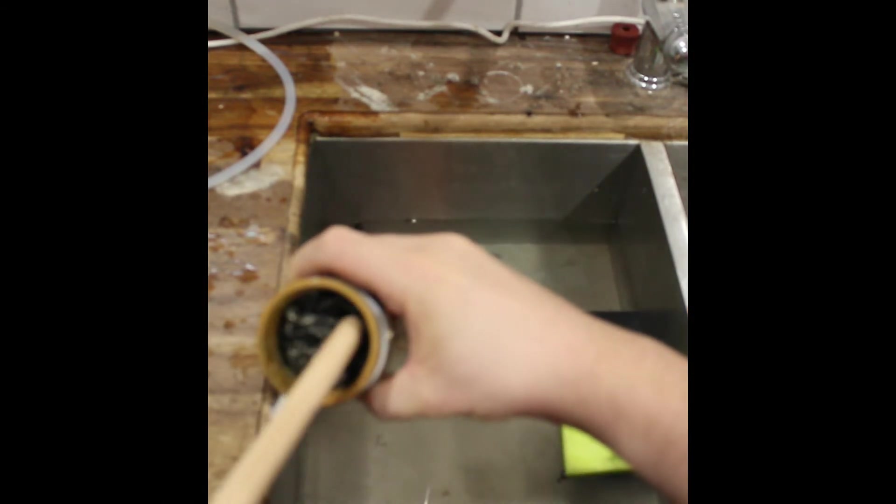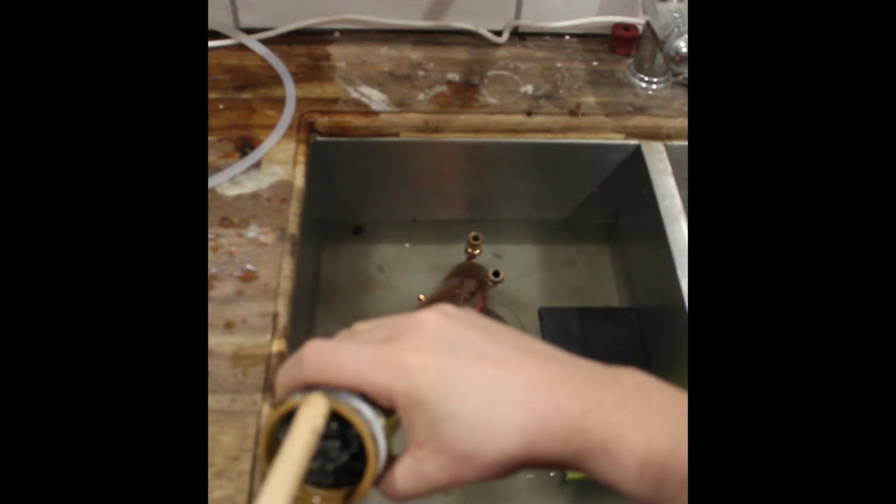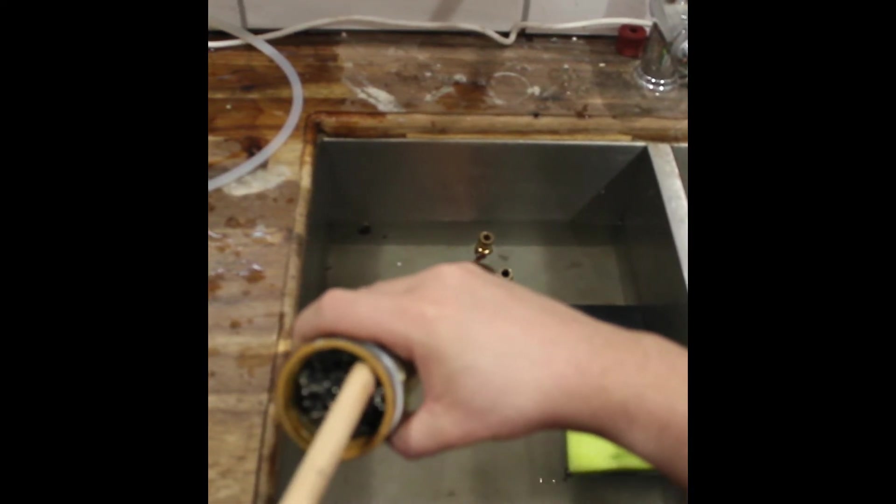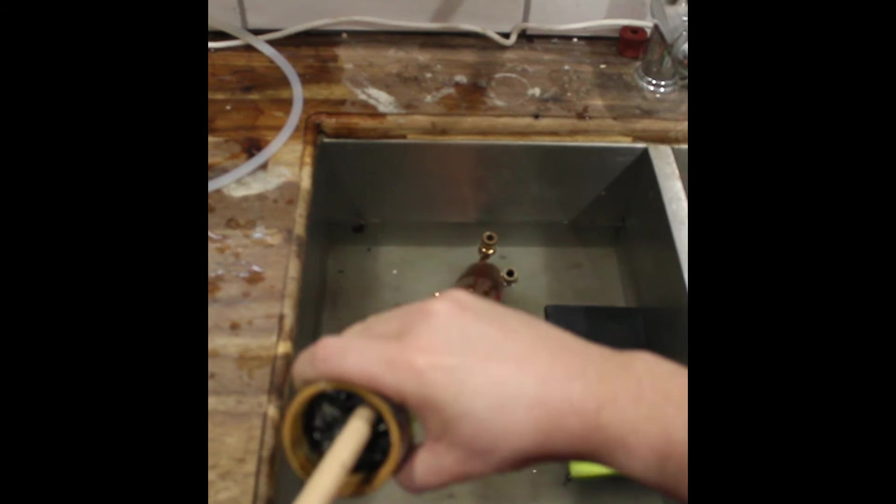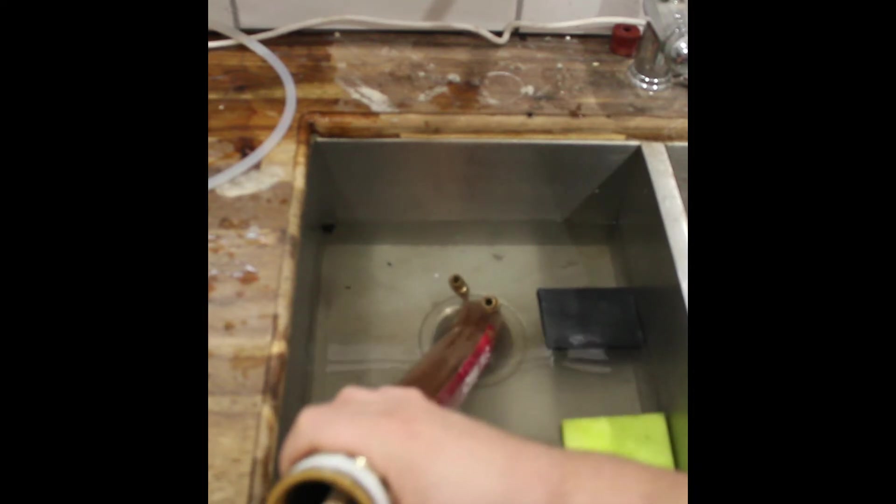From here, you have a slightly more challenging decision to make. You can, if you wish, unpack your column. This involves taking out all the material from within the column. This can be stainless steel or copper mesh. In some cases, a ceramic product is used instead, and these look almost like small bearings.